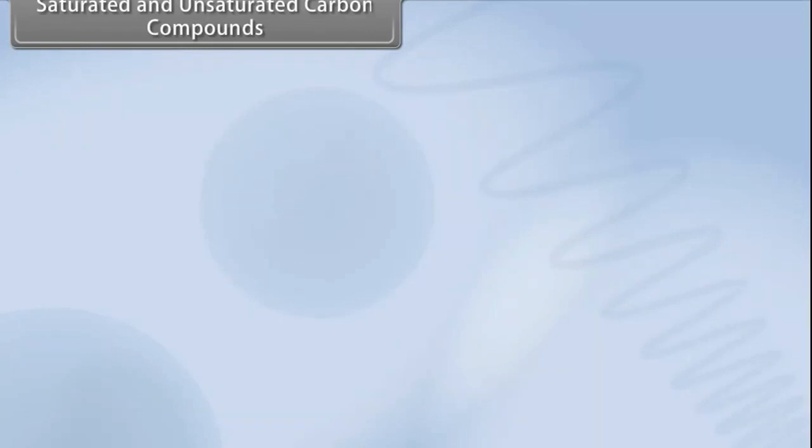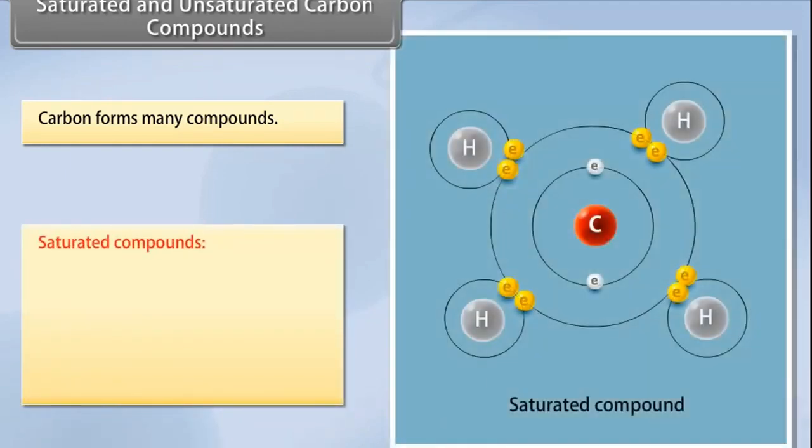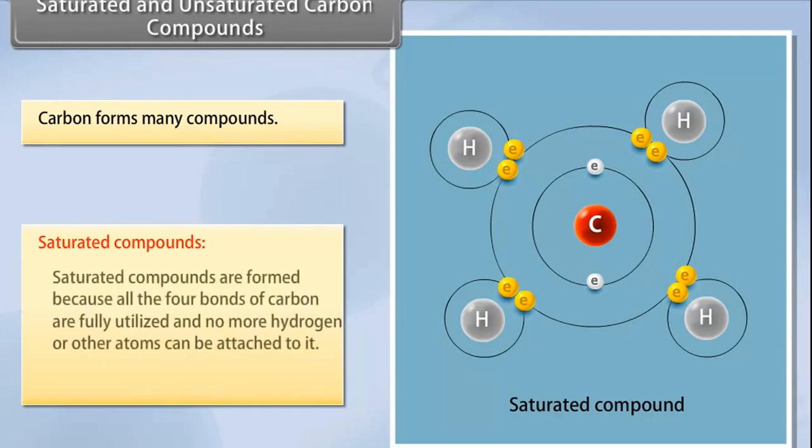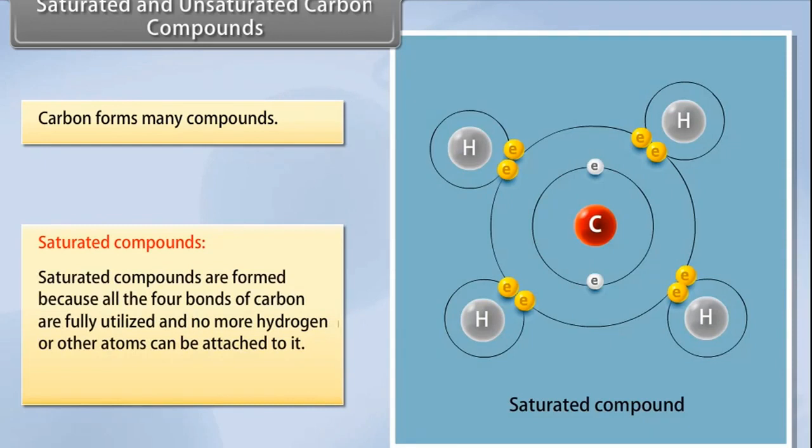Saturated and unsaturated carbon compounds. Carbon forms many compounds. The two main types of compounds are saturated compounds and unsaturated compounds. Saturated compounds: The carbon and hydrogen compounds where the adjacent carbon atoms contain only one single covalent bond are known as saturated hydrocarbons. The reason for the formation of saturated hydrocarbons is because all the four bonds of carbon are fully utilized, and no more hydrogen or other atoms can be attached to it. These are known as alkanes.